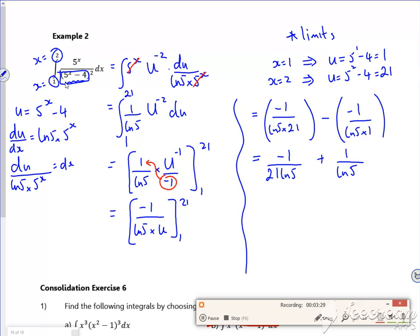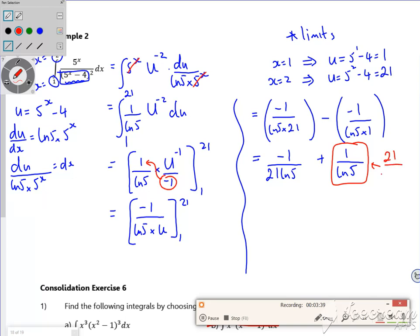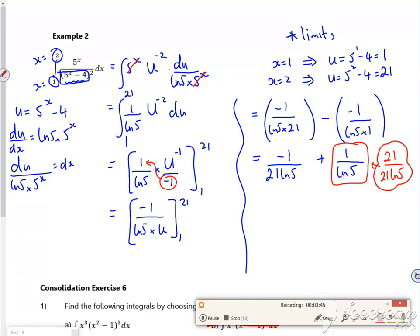So if I make them the same denominator, on this, but multiply by 21 on the top and the bottom, is 21 over 21 log 5. Yeah. So just times it by 21 over 21.